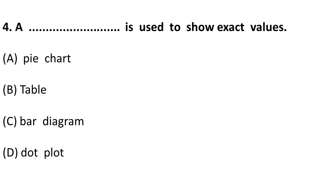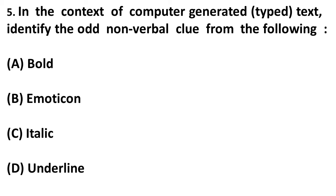Next question: a blank is used to show the exact value. Read the question carefully. Option A is a pie chart — you get an idea but not the exact value. Bar diagrams and dot plots show relativity. But in a table, you get the exact value, not an approximate value. So the correct answer is table.